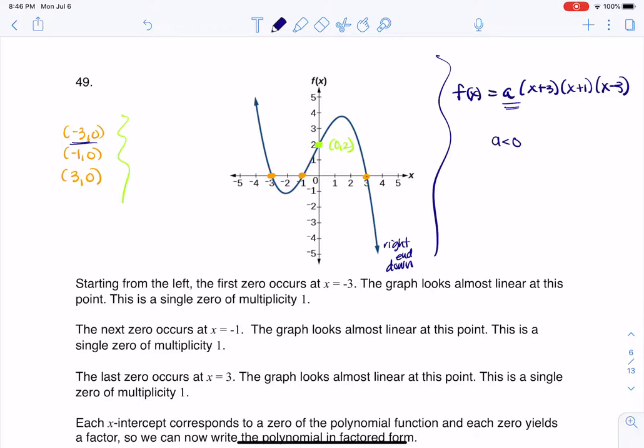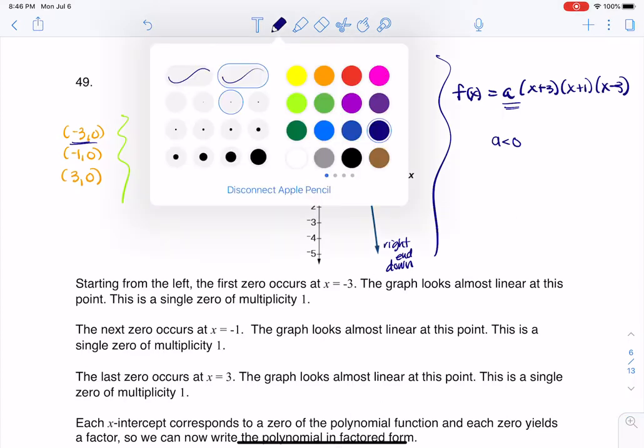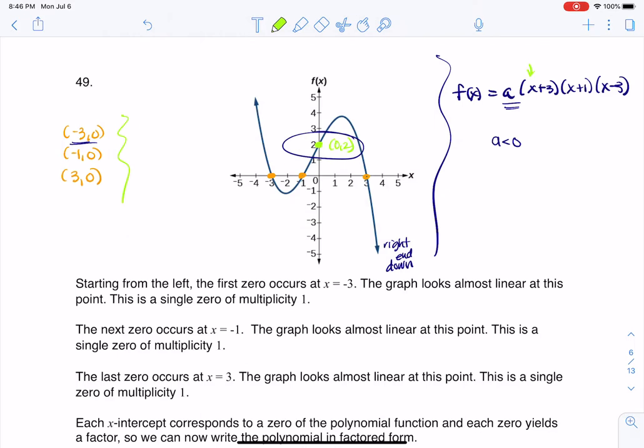Now how do I find a? Well, that's why we have the y-intercept. So I'm going to plug in 0 for x, and I'm going to plug in 2 for y. So quite literally, let me stay consistent with my color coding, I'm going to put 0 here, 0 here, 0 here, and I'm going to put a 2 here.